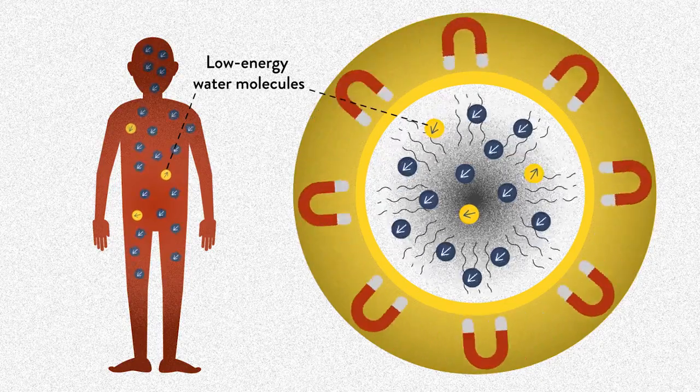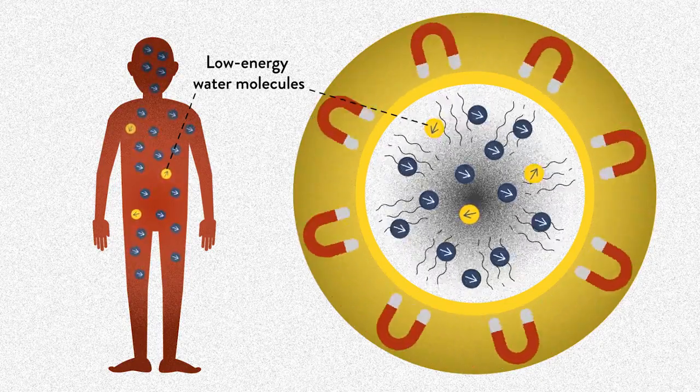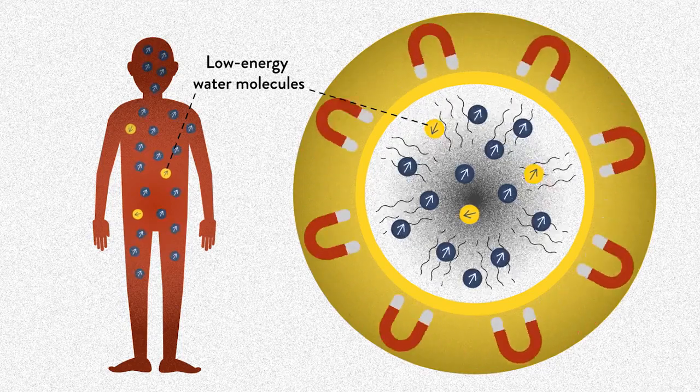To create an image of a body part, for example the brain, the machine focuses on the low energy water molecules.